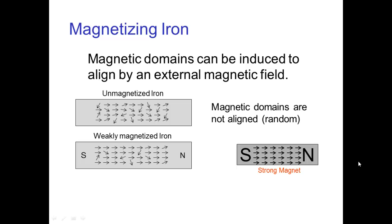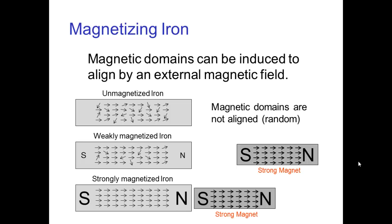Well, if we bring a strong magnet close to that piece of iron that was unmagnetized, some of the internal domains start to become aligned with that strong magnet nearby. And then that piece of iron becomes weakly magnetized. Now if we bring the strong magnet even closer and leave it there for a long time, then more and more magnetic domains become aligned and eventually we have now a new piece of iron that has been magnetized.